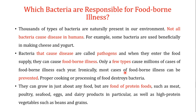I told you which kinds of bacteria are responsible for foodborne illnesses. There are thousands of types of bacteria naturally present in our environment, but not all of them cause diseases in humans. Bacteria that can cause disease in humans or other living organisms are called pathogens, and these pathogens causing foodborne illnesses are majorly found in foods rich in proteins, like meat or poultry.